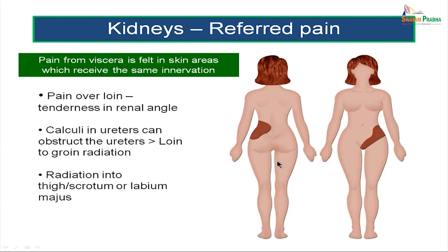Referred pain from the kidneys: pain from the viscera is referred to skin areas which receive the same innervation. Kidney pain is typically pain over the loin — tenderness in the renal angle. Calculi in the ureters can obstruct the ureters and the pain radiates from the loin to the groin. This is the typical pain of ureteric colic, in which pain starts in the lumbar region and extends downwards into the groin region. Sometimes the pain can extend into the thigh or the labium majus.